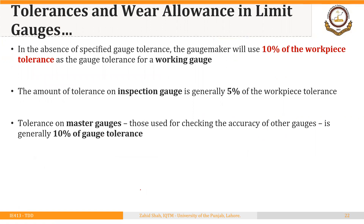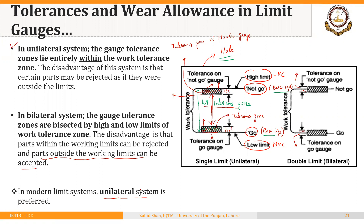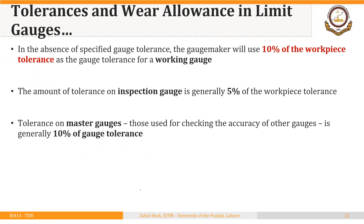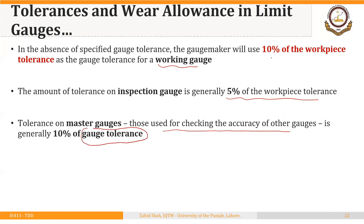As for the value of tolerance applied to gauges: as a rule of thumb, in the absence of specified gauge tolerance, the gauge maker uses 10% of the workpiece tolerance as the gauge tolerance for a working gauge. The tolerance on an inspection gauge is generally 5% of the workpiece tolerance. Tolerance on master gauges — those used for checking the accuracy of other gauges — is generally 10% of gauge tolerance.